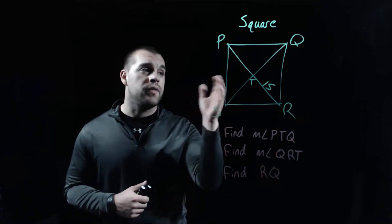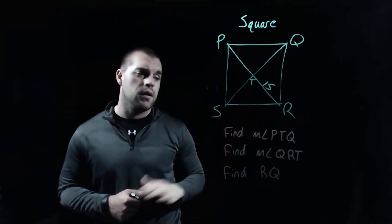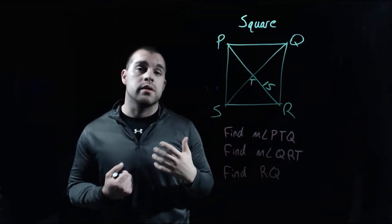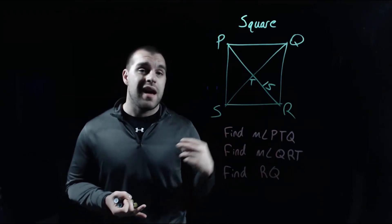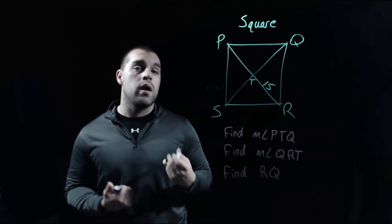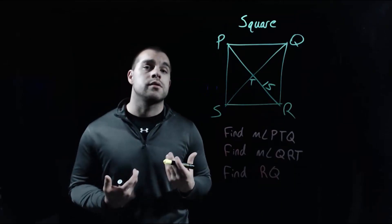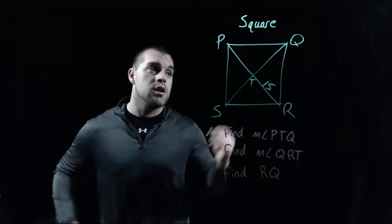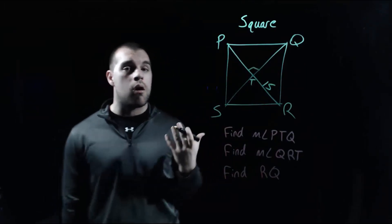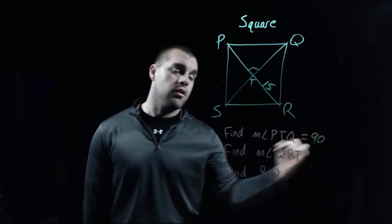Looking at our last example, we've got a square and we're only given one measure — the length from T to R is 15. The first thing we want to find is the measure of angle PTQ. Squares are parallelograms, rhombuses, and rectangles, so they have a bunch of special properties. One of the properties, because they're a special kind of rhombus, is that the diagonals are perpendicular to each other. So all of the angles created on the inside where those diagonals meet are 90 degree angles. The measure of angle PTQ is a 90 degree right angle.